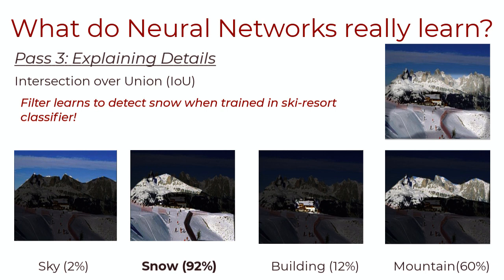And, in this example filter, you'll see that it detects snow in an image a lot. So, we created a snow detector, effectively, without explicitly training the network to detect snow. It just learned to detect snow when looking for ski resorts. And, this is very meaningful and it shows that these network filters are actually learning something meaningful to humans.